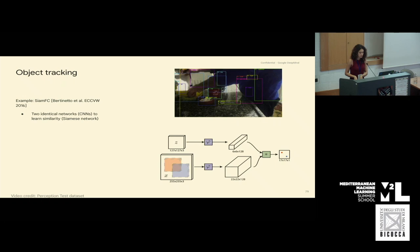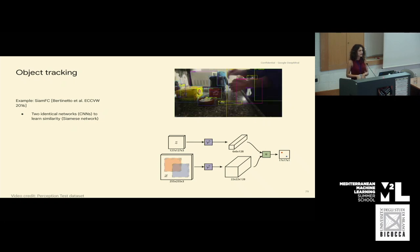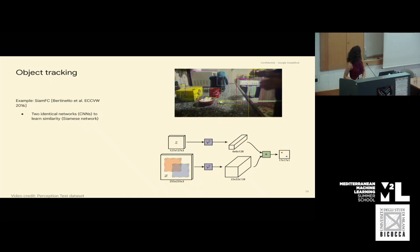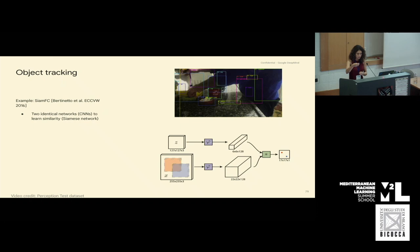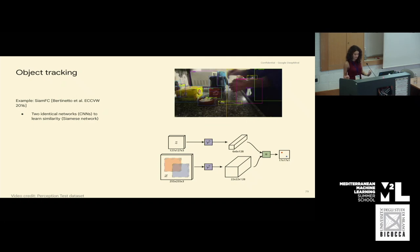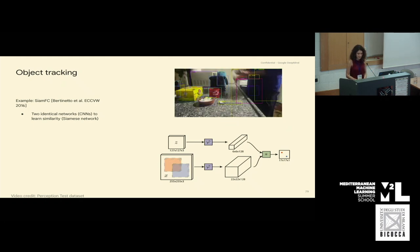Another computer vision problem is object tracking, which happens over a video. Given an object, it tracks where it is, usually done through bounding boxes. For example, this video from the Perception Test dataset shows that over time the bounding box around a tea box changes because the person is opening it. One example model that tackles this is SiamFS, which contains two identical networks to learn the similarity between representations — essentially a Siamese network — and it is fully convolutional.